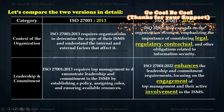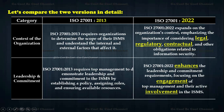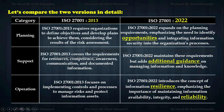Regarding planning, the 2013 version requires organizations to define objectives and develop plans to achieve them, considering results of the risk assessment. ISO 27001 2022 expands on planning requirements, emphasizing the need to identify opportunities and integrate information security into organizational processes. As for support, 2013 covers requirements for resources, competency, awareness, communication, and documented information, while 2022 maintains these but adds additional guidance on managing information and knowledge.